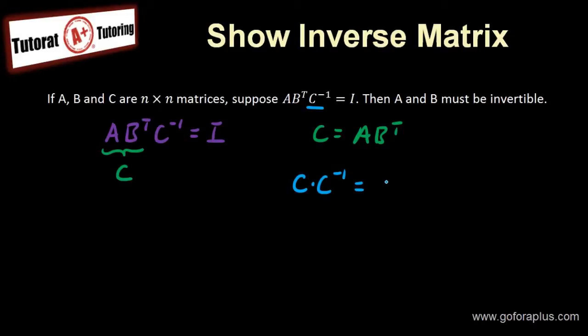right? This is equal to AB^T times (AB^T)^(-1). You agree with that, right? So C times C^(-1) is AB^T times (AB^T)^(-1) because I'm just applying inverse on the C.